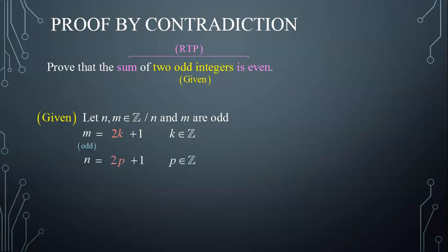Similarly, n being odd, then n can be written as 2 times an integer plus 1, say 2p plus 1, where p is an integer.